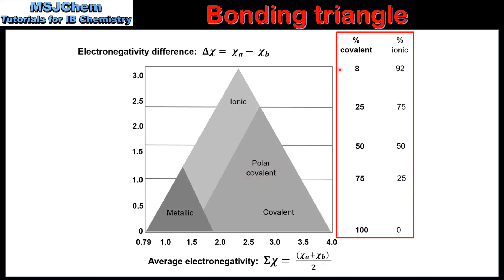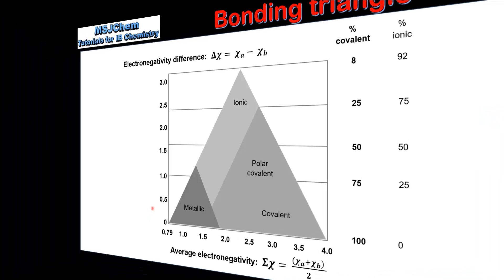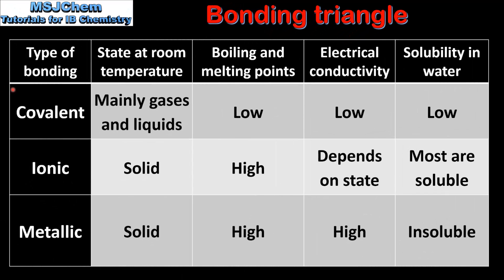On the right side we also have Percent Covalent and Percent Ionic. As mentioned previously, the position on the Bonding Triangle not only determines the type of bonding but also the properties of the substance. So next we'll have a quick review of the different properties of the Bonding Types. In this table we'll look at the type of bonding together with their properties: State at Room Temperature, Boiling and Melting Points, Electrical Conductivity, and Solubility in Water.